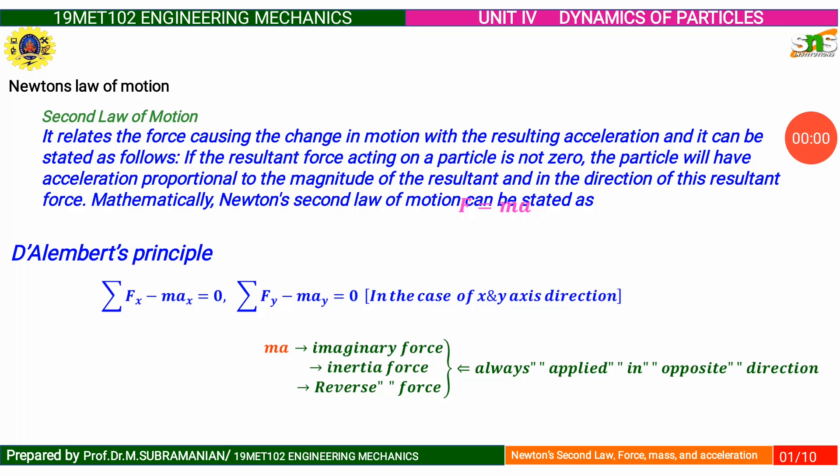Recap Newton's Law of Motion. It relates the force causing the change in motion with the resulting acceleration. If the resultant force acting on a particle is not zero, the particle will have acceleration proportional to the magnitude of the resultant and in the direction of this resultant force. Mathematically, Newton's second law of motion can be stated as force equal to mass into acceleration.